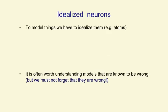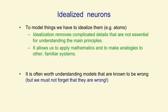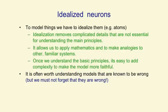In order to understand anything complicated, we have to idealize it. That is, we have to make simplifications that allow us to get a handle on how it might work. With atoms, for example, we simplify them as behaving like little solar systems. Idealization removes the complicated details that are not essential for understanding the main principles. It allows us to apply mathematics and to make analogies to other familiar systems. And once we understand the basic principles, it's easy to add complexity and make the model more faithful to reality.